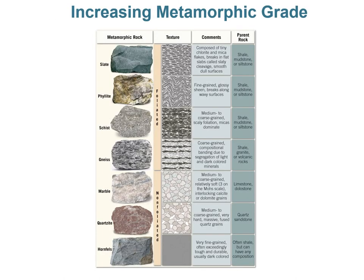This is how we classify metamorphic rocks based on whether they are foliated or non-foliated. The foliated rocks go in order of increasing metamorphic grade: slate (lowest), then phyllite, then schist, then gneiss (highest). Here is a texture comparison under the microscope with descriptions for each rock type.